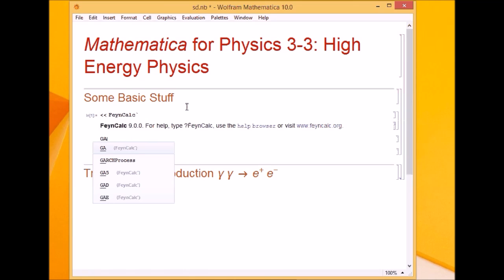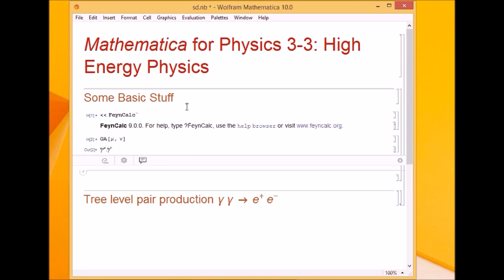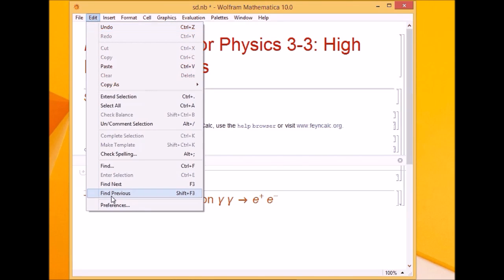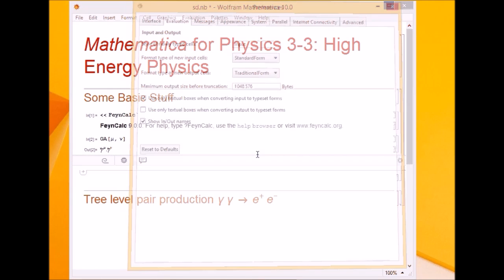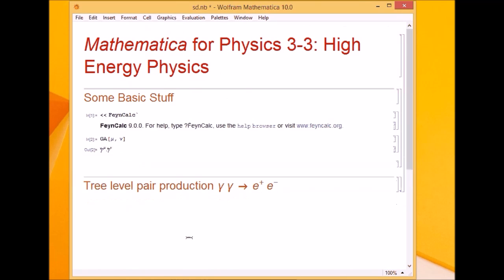GA stands for gamma matrices. If I want two gamma matrices with index mu and nu, it gave me gamma mu and gamma nu. If you aren't getting the output properly, make sure your output is in traditional format. Go to Edit, Preferences and set it to traditional format.